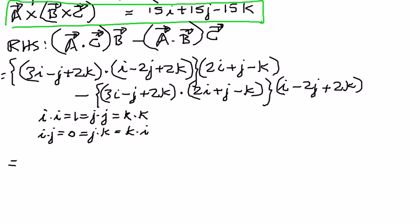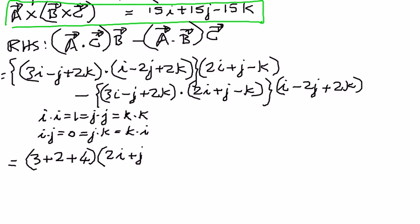Computing a dot c: 3i·i = 3 (i·j and i·k terms vanish); −j·(−2j) = +2 (j·j = 1, so this gives +2); 2k·2k = +4. Therefore a dot c = 3 + 2 + 4 = 9. We will multiply this by vector b = 2i + j − k.